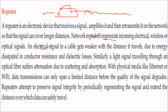These electrical signals, whenever they travel over long distances, tend to fade — that is, they leak energy due to energy dissipated in conductor resistance or dielectric losses. Similarly, light signals traveling through an optical fiber also experience scattering and absorption kinds of attenuation.